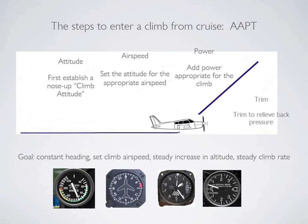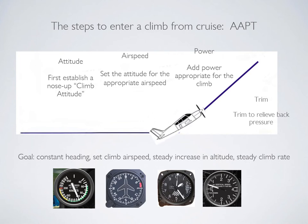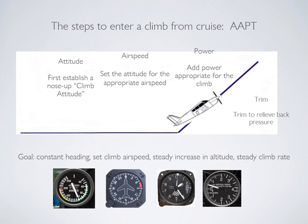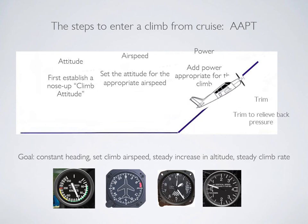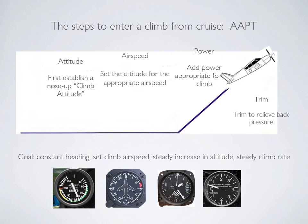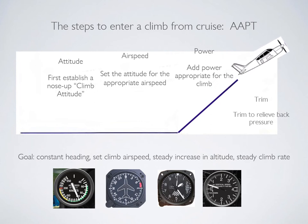Let's assume that your airspeed started at 95 knots and it decreases to 80 knots — go ahead and add full power. Last, trim to relieve pressure. At this point, you should find yourself in a climb. It'll be a full power climb at approximately 80 knots. The goal here is to have a constant heading, a specific climb airspeed, a steady increase in altitude, and a steady climb rate on the VSI.